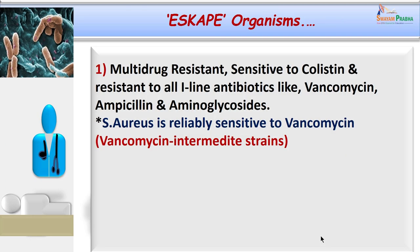There are three important characteristics of ESKAPE organisms. First, they are multidrug resistant but usually sensitive to colistin — as found in our index case — resistant to first-line antibiotics like vancomycin, ampicillin, and aminoglycosides. Staphylococcus aureus is usually reliably sensitive to vancomycin, but vancomycin resistant Staphylococcus aureus strains are now increasingly encountered.